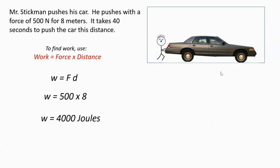Okay, so he did 4,000 joules of work. And what that means is he lost 4,000 joules of his energy, and he gave the car 4,000 joules of energy. That energy was turned into kinetic energy as the car was rolling.